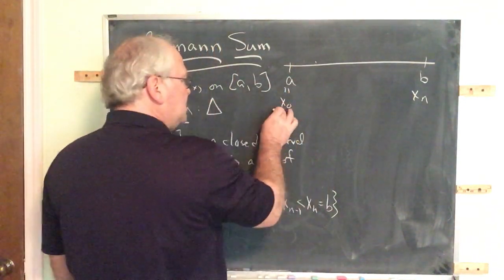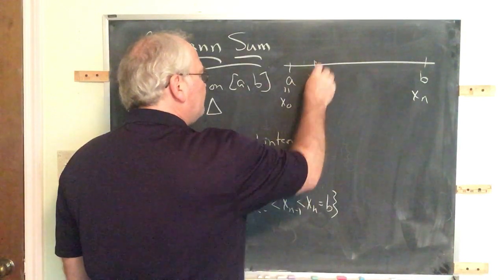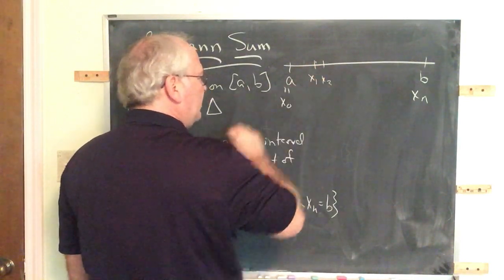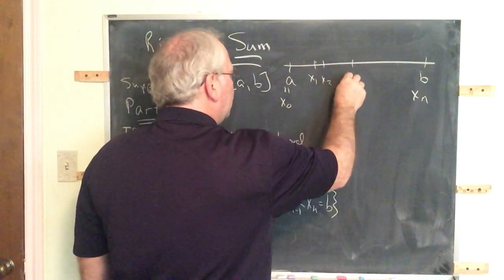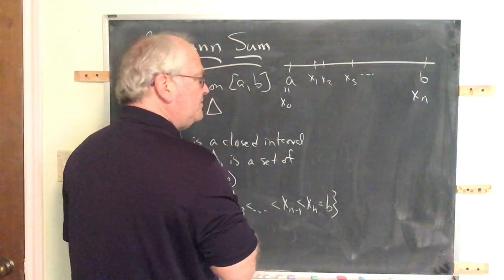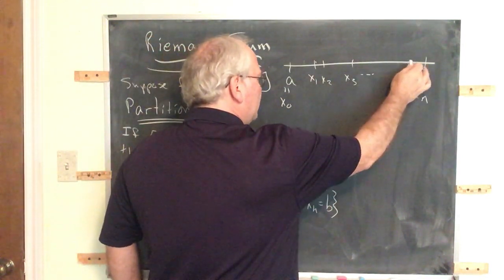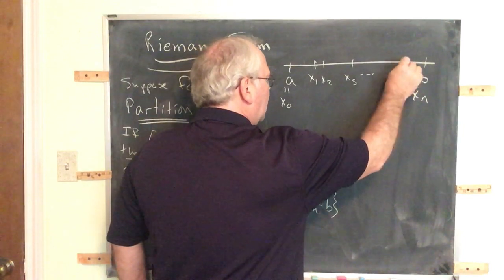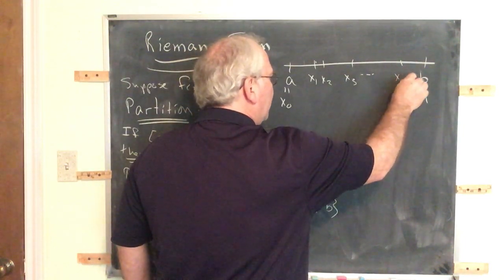And so all we require is they must be in sequence. So this is, if this is x0, maybe this is x1. Maybe the next one x2 is very close. Maybe x3 is here. And this continues. This is x sub n. What's the one immediately in front of that? Maybe it's right here. That is x sub n minus one.